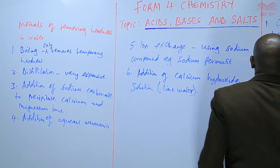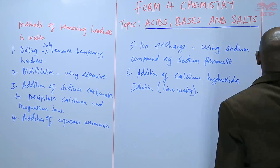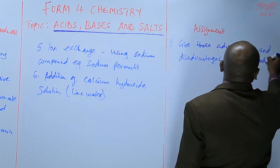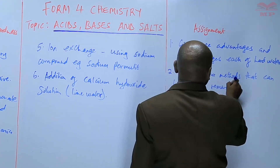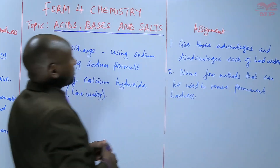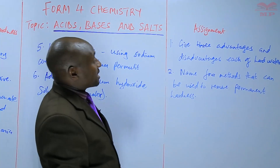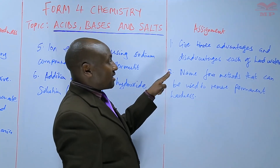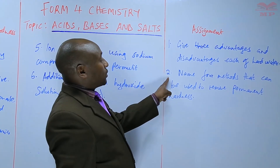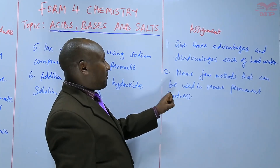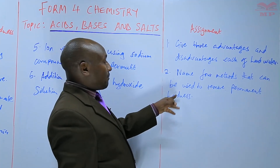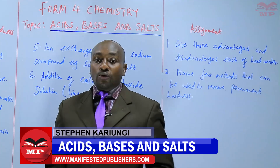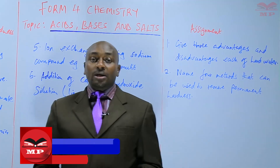The assignments are: number one, give three advantages and three disadvantages each of hard water; number two, name four methods that can be used to remove permanent hardness — the key thing here is permanent hardness. We'll stop there. That marks the end of our topic of discussion. We shall meet next time. Goodbye and good luck.